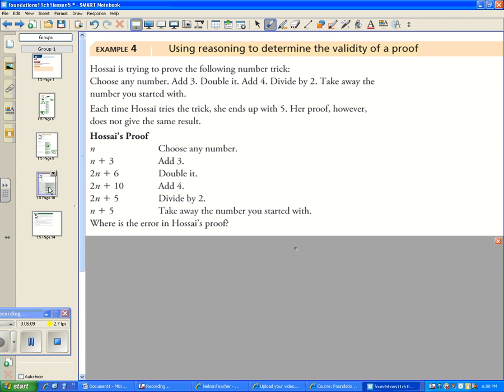Another example: Hosai was trying to prove the following number trick. Choose any number, add three, double it, add four, divide by two, take away the number you started with. Each time she tries the trick, she ends up with five. Her proof, however, does not give the same result. So here's her proof.